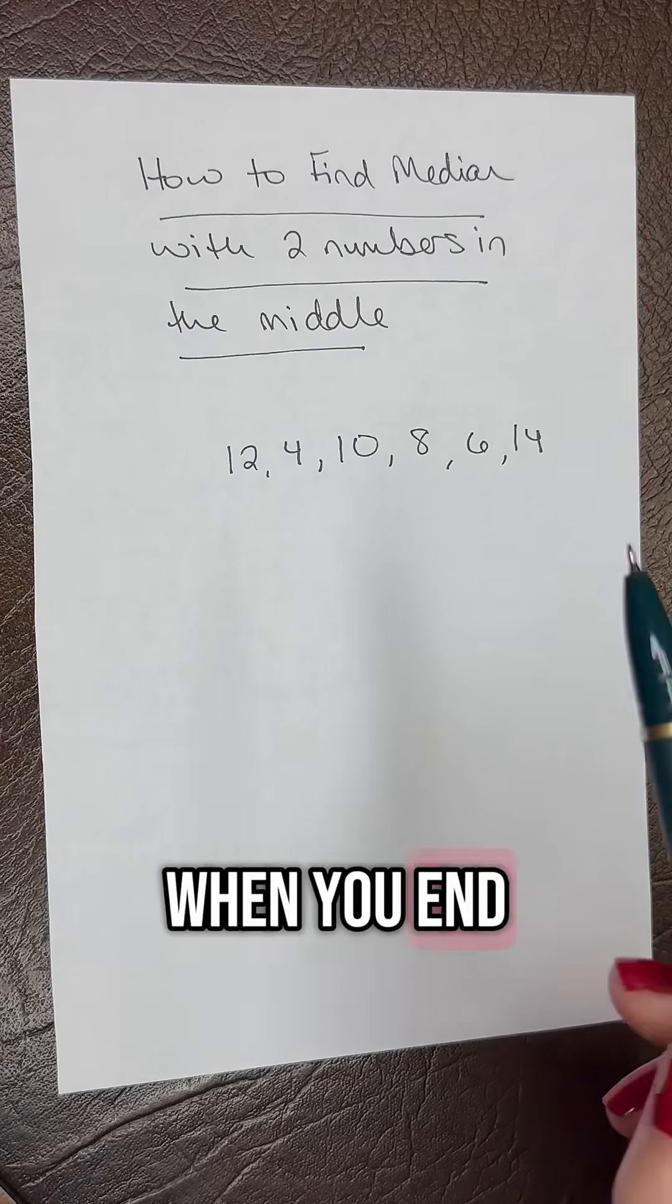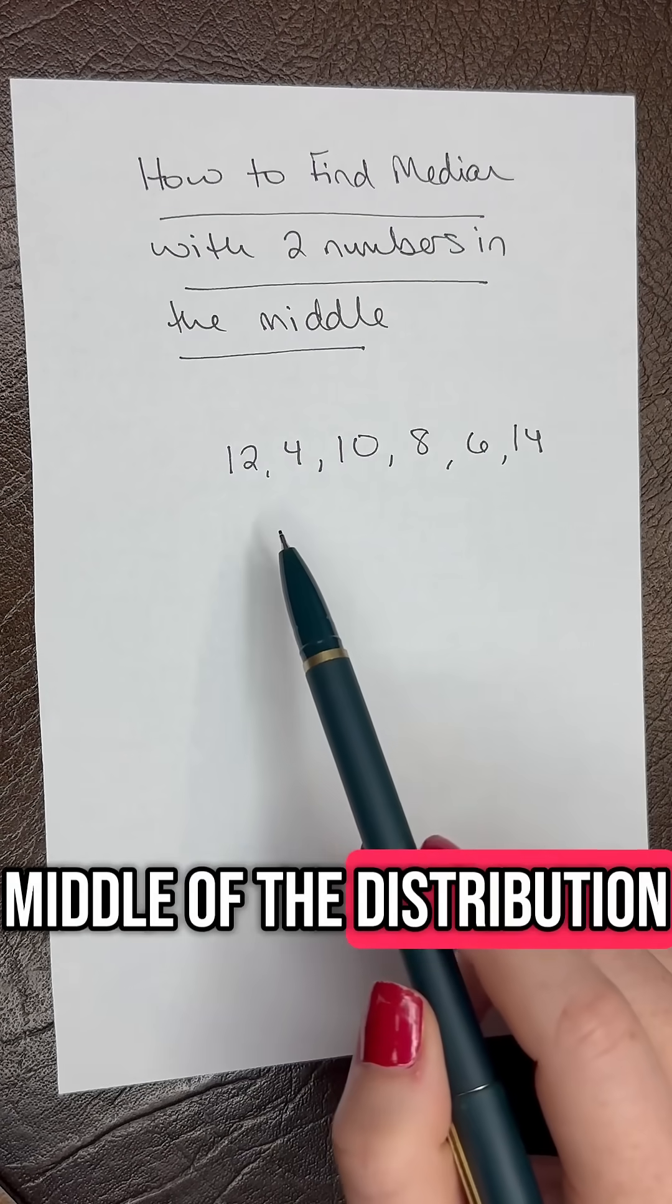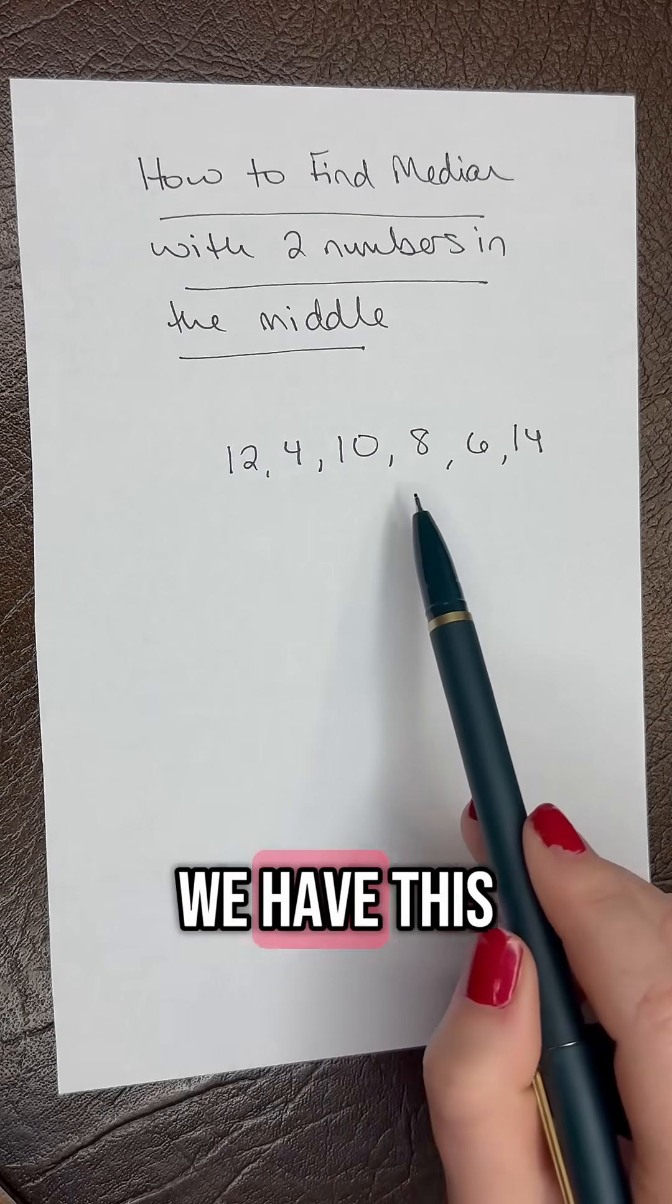How to find the median when you end up with two numbers in the middle of the distribution. So let's say we have this data set here.